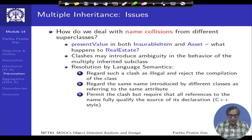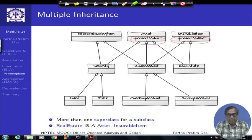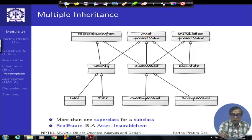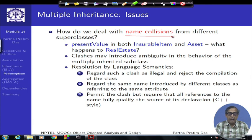One issue is name collision. The asset class and insurable item class may independently have a data member in common, such as present value. When bank account or real estate inherits from both, it actually gets two present-value members, raising the question of which one to use. This creates ambiguity or clash in the behavior of the multiply-inherited subclass, and there is no unique answer on how it should be handled.